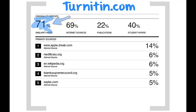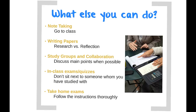These are just some of the things you can do to be successful with your academic work. In the remainder of this presentation, you will learn other things you can do to be successful, as well as what happens if you are found responsible for academic dishonesty.